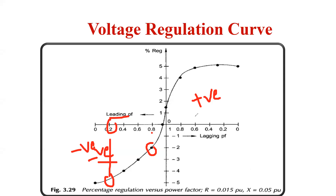This concept is very important with respect to your numericals. If a problem gives 0.6 lagging power factor, your answer must be positive. Students often get confused between EPH − VT and VT − EPH, leading to sign errors. The sign indicates whether the power factor is lagging or leading, so always check your sign carefully.